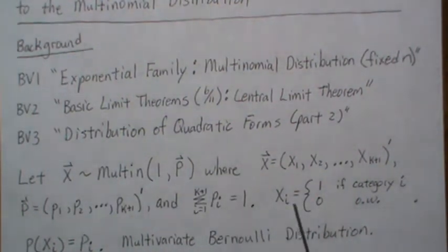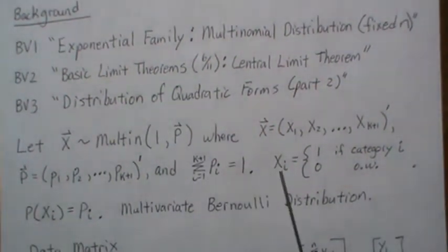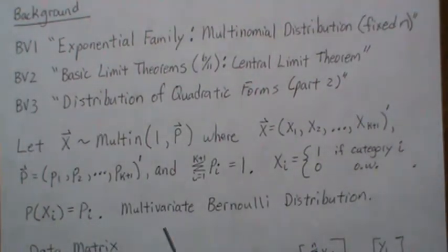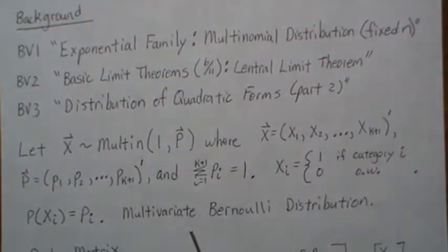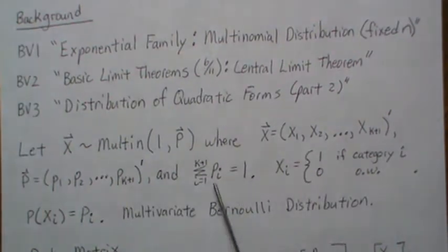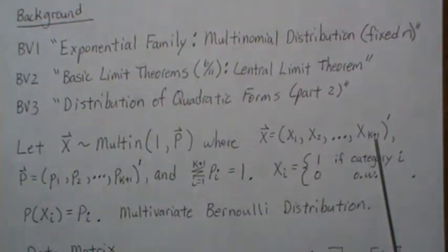This defines the Xi's and the probability of a category. Xi represents one of the components of our vector, and the probability of the i-th component is Pi. In a sense this is like a multivariate Bernoulli distribution — we're taking a sample of size 1 and all the components are 0 except for 1.